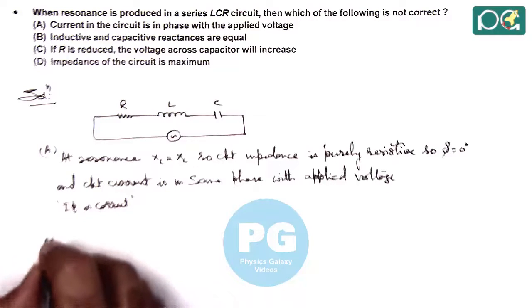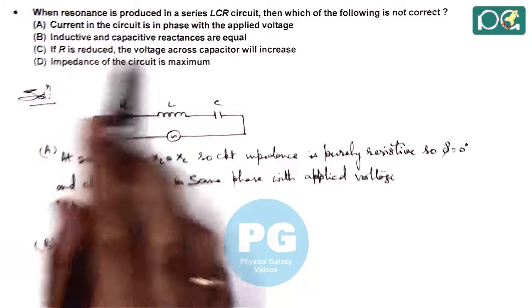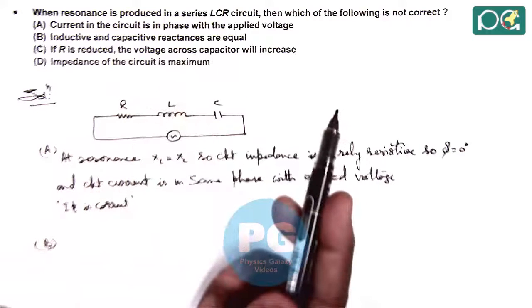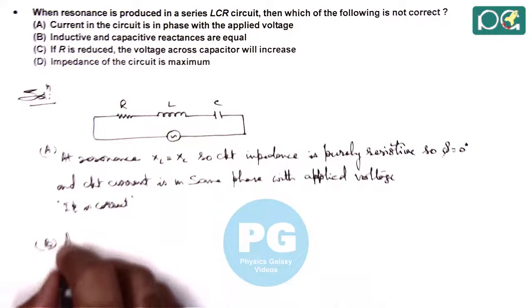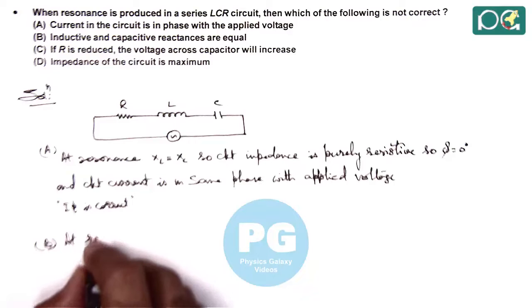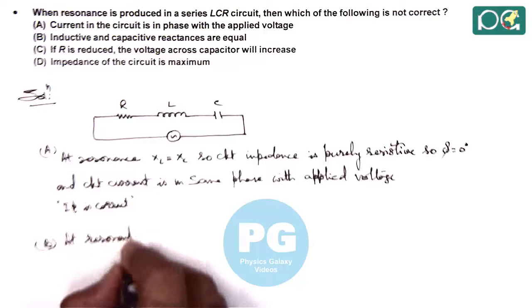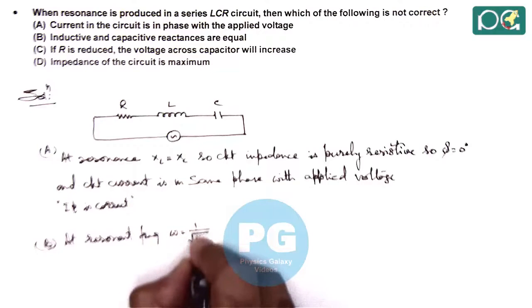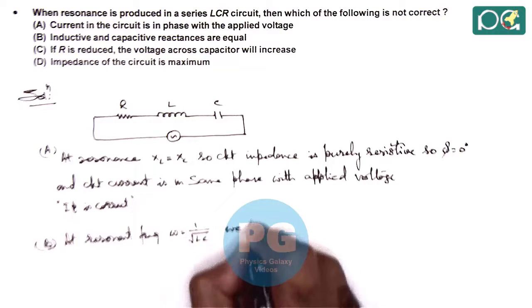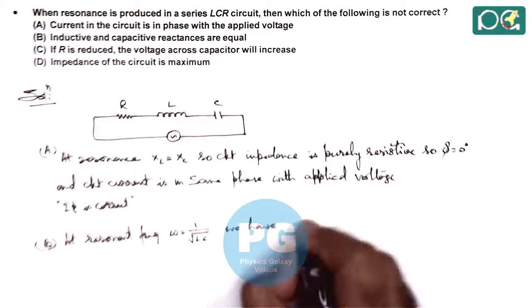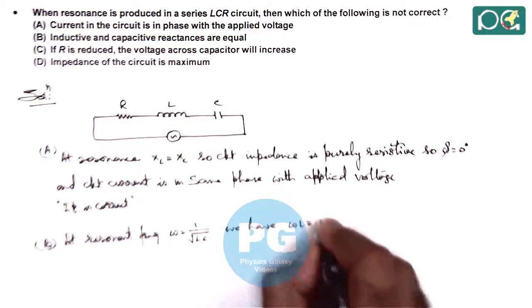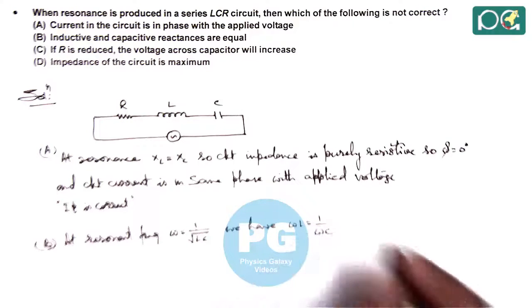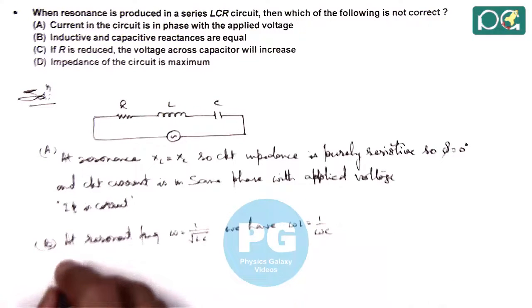If we talk about option B, here it is saying inductive and capacitive reactances are equal. That's right. We can also state at resonant frequency omega is equal to 1 by root LC. We have omega L is equal to 1 by omega C. So we can state this is correct.